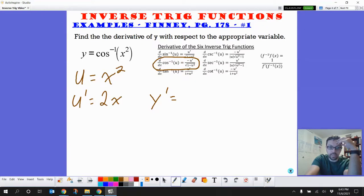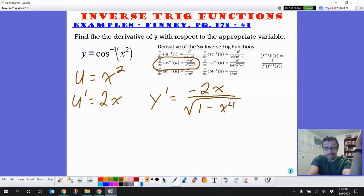So this derivative y prime is just going to be all of this stuff that's in there. So that is negative u prime, so negative 2x over the square root of 1 minus my u value squared. So u is just x squared, so we square an x squared and we get x to the fourth. And that's it. We done. We did it. We found the derivative. It's that easy peasy.